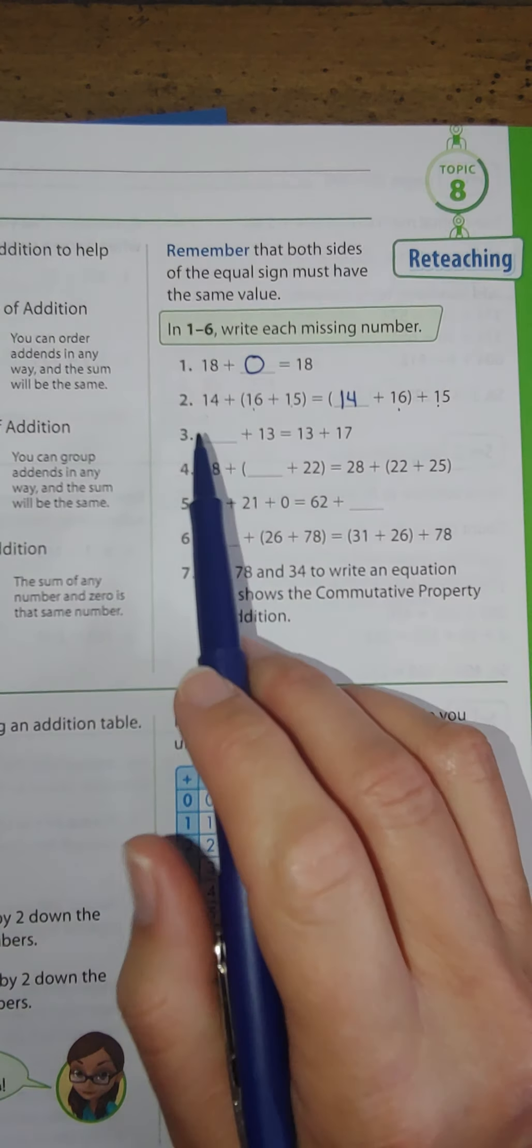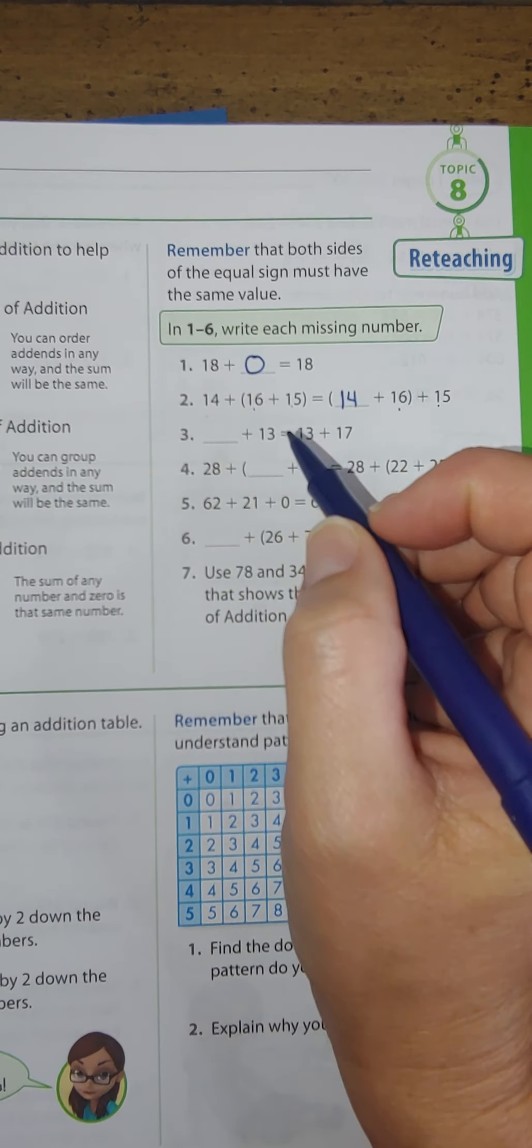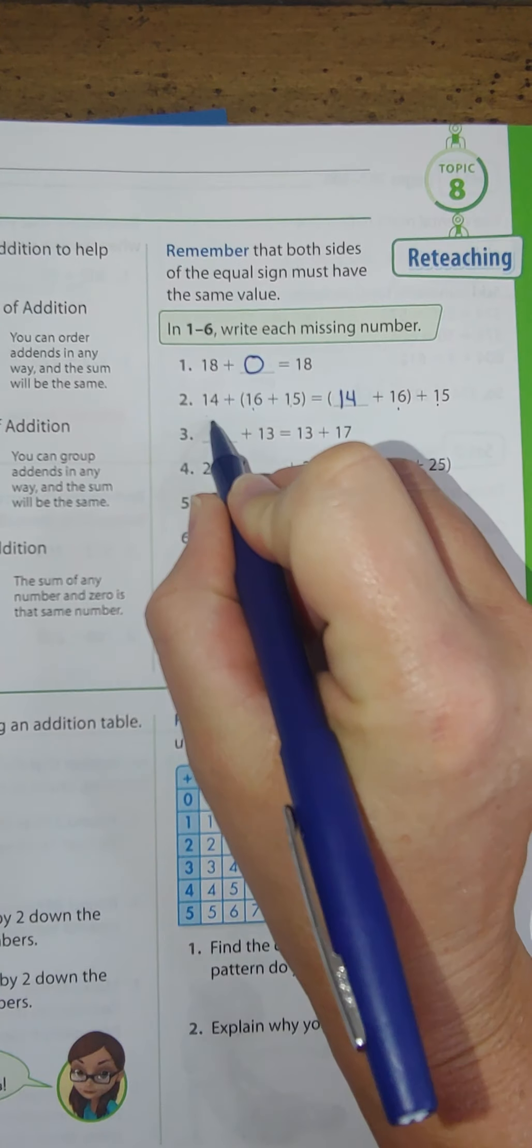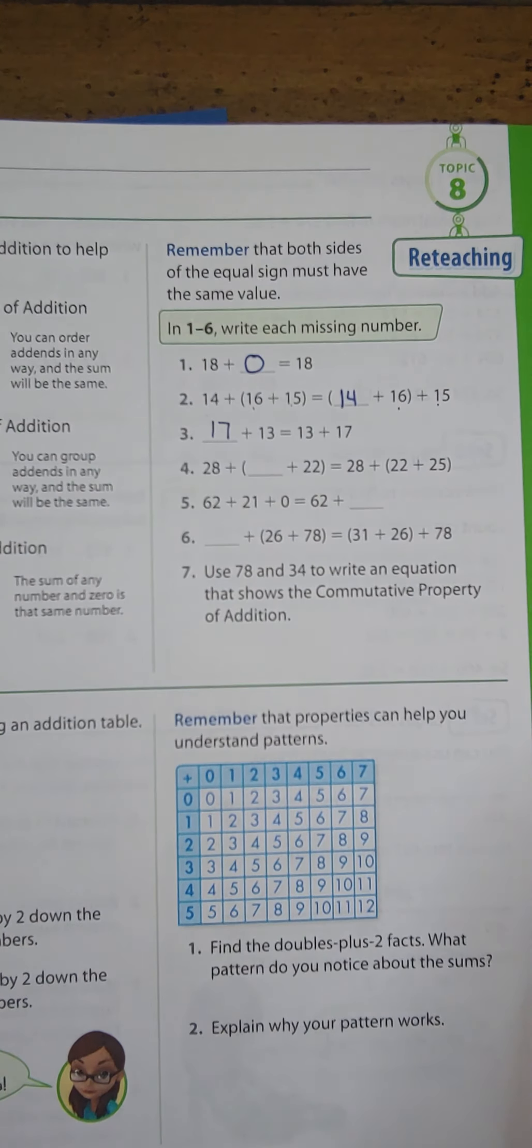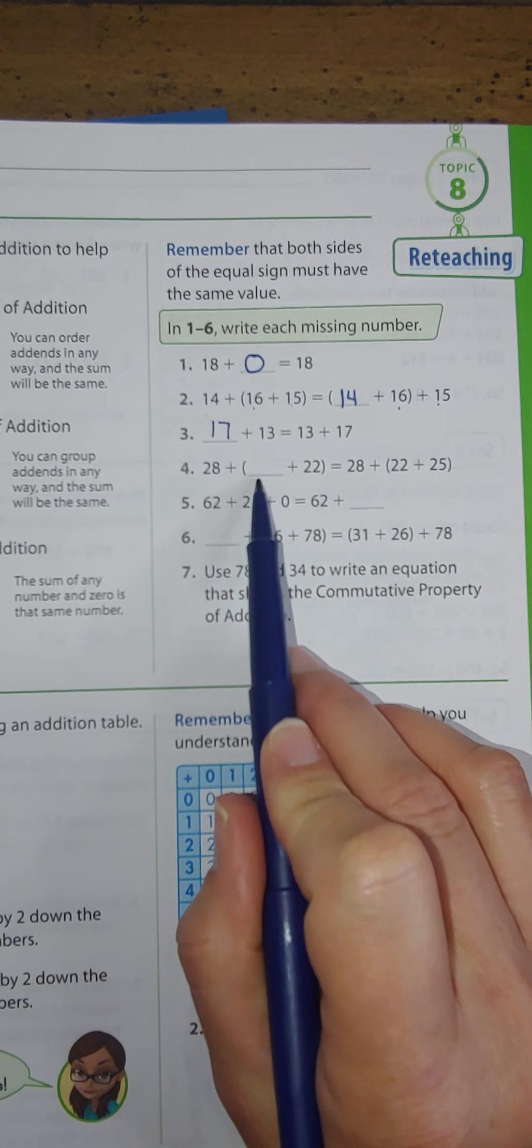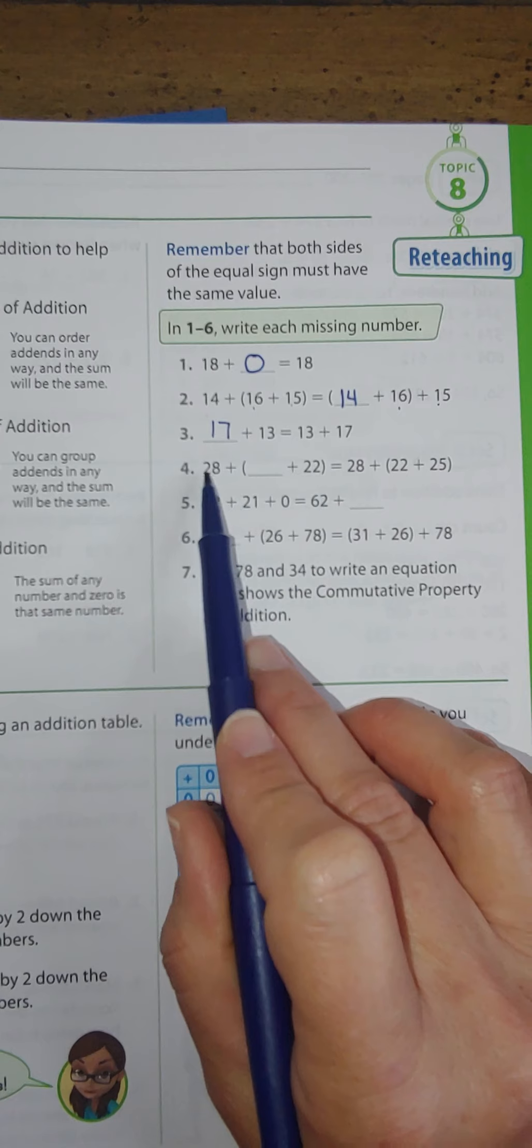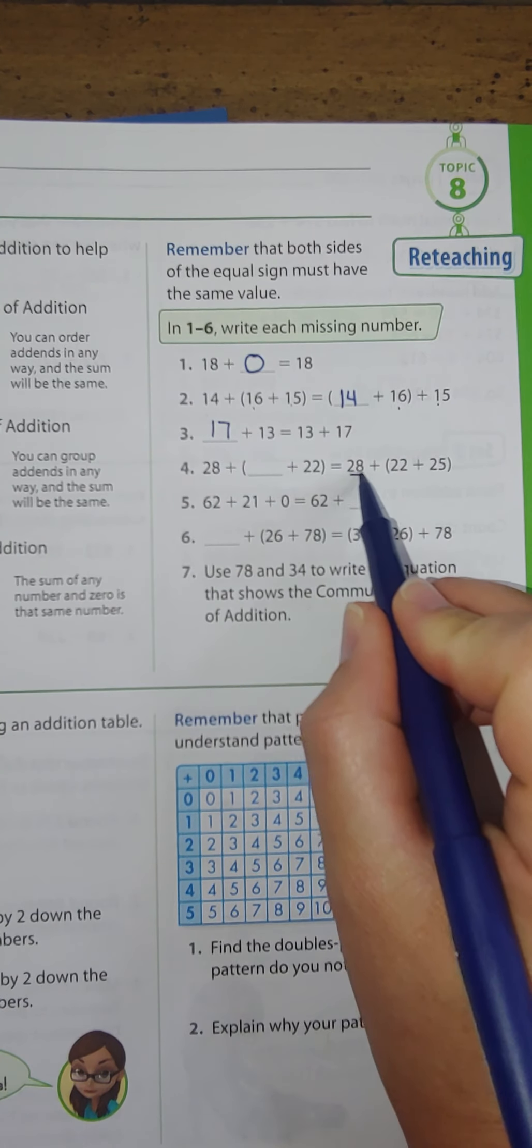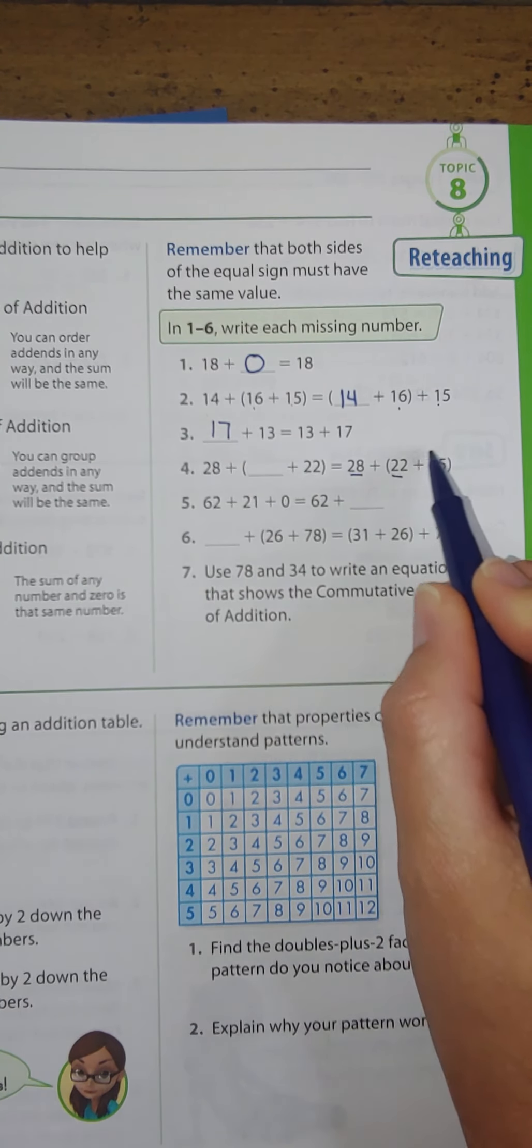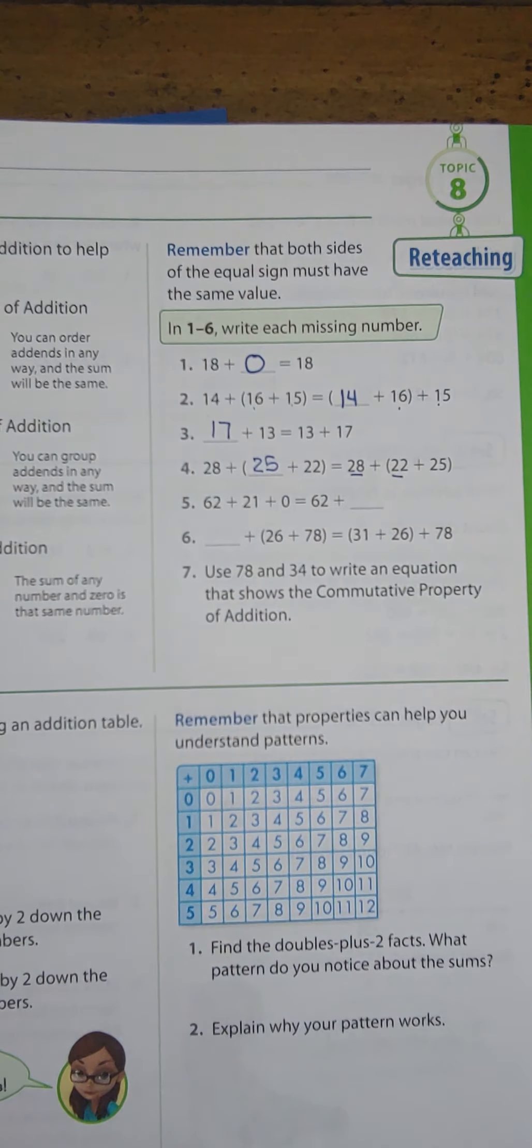Number three, I see something plus 13 equals 13 plus 17. This would be the commutative property where they're switching the addends around. On number four, 28 plus something plus 22. My three numbers are 28, blank, and 22. Over here I see 28 and 22, but there is 25 that's missing. So they're actually using the commutative property inside of the associative property.